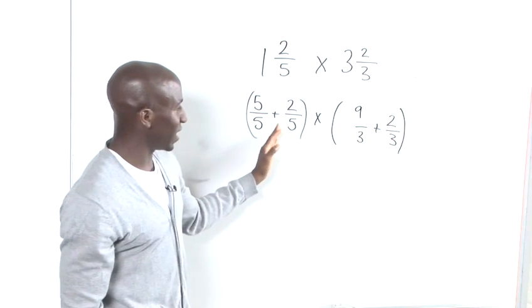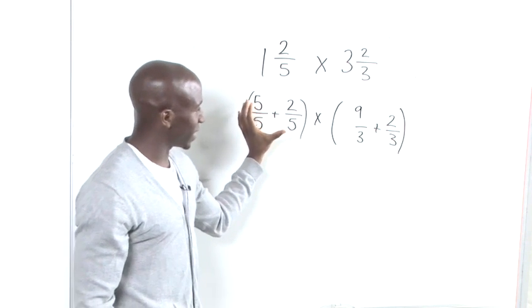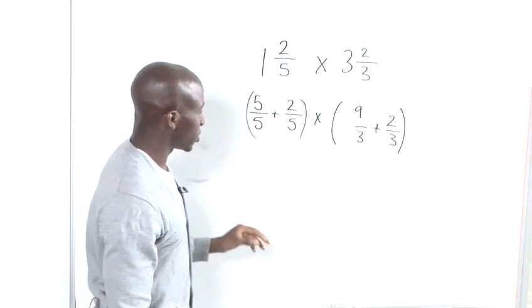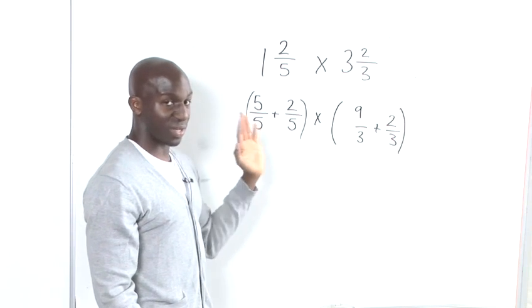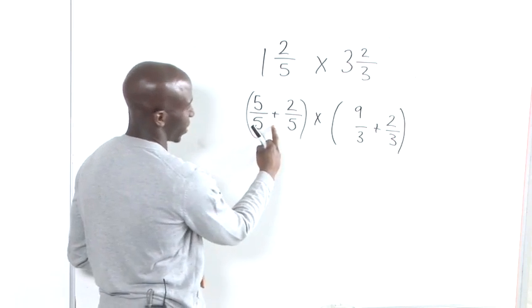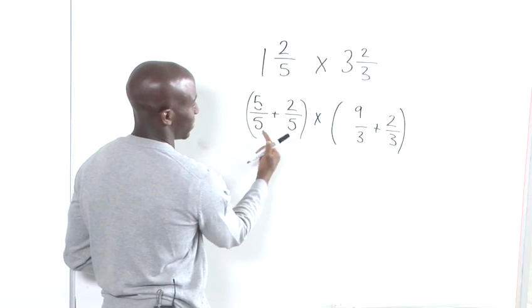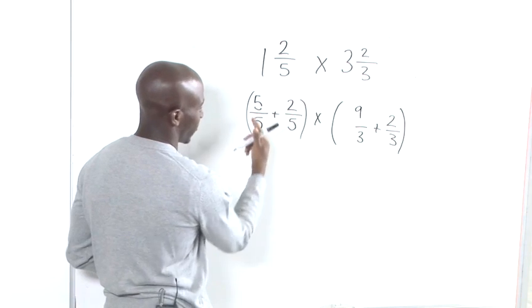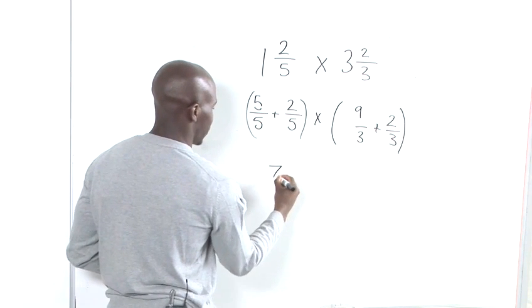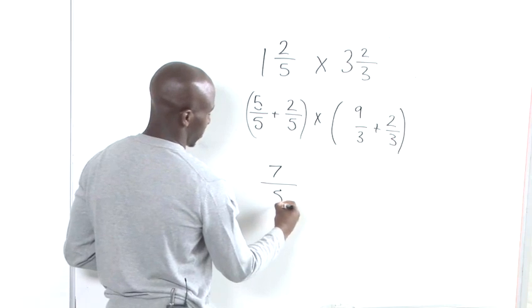Now it becomes a little bit more simpler from here. What we want to do now is bring together our fractions. So we've got 2 fractions that we can directly multiply by. So the first one that we're going to do here is add the tops and write the same as the bottom. So if we add the tops, we've got 5 plus 2, which is 7. And then we write the bottom as the denominator.